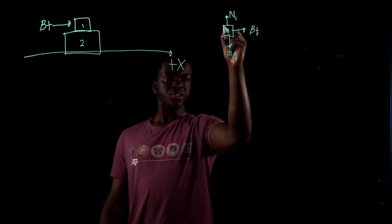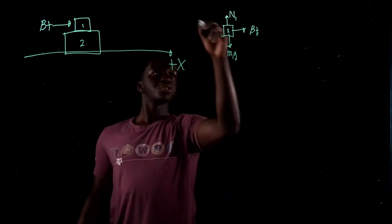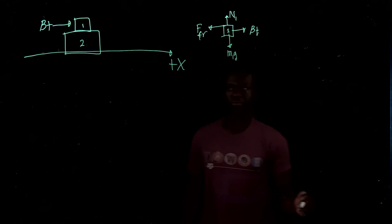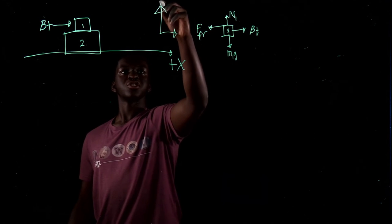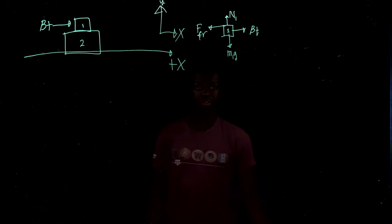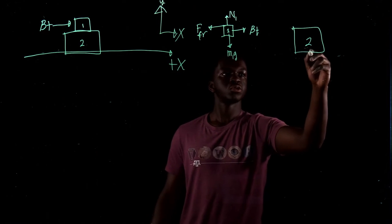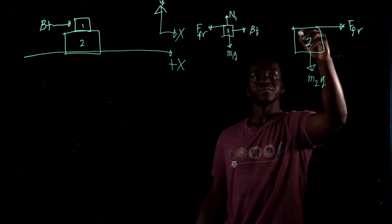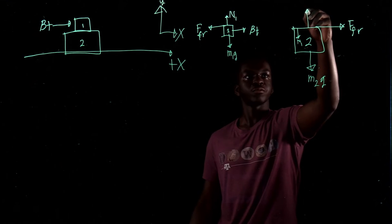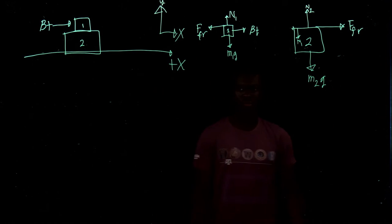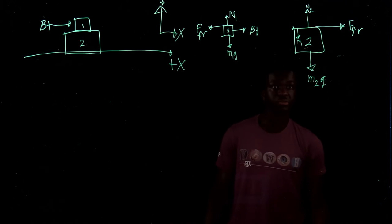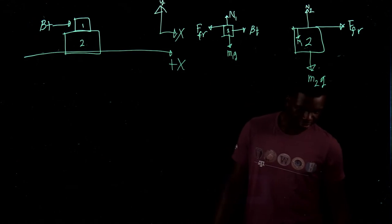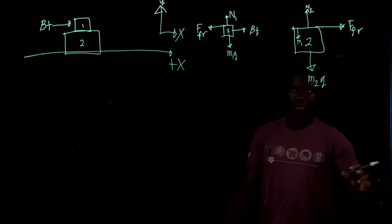The friction force between the blocks is present because the problem states coefficient of friction mu between them. Since the force is pushing block one to the right, the static friction force on block one acts to the left. For block two, we have: M2G downward, the reaction friction force to the right (opposite direction), N1 pushing down on it, and N2 pushing up from the ground.